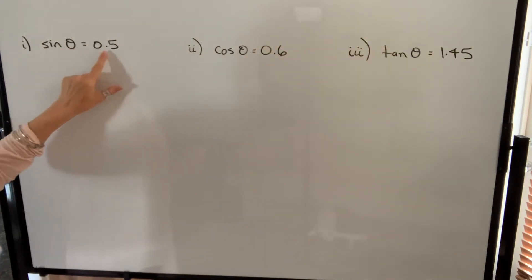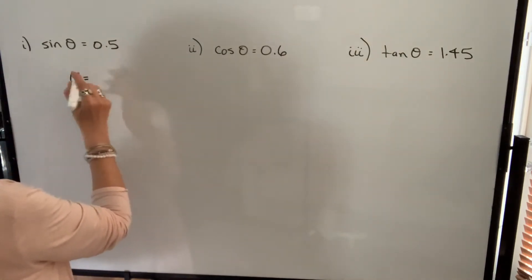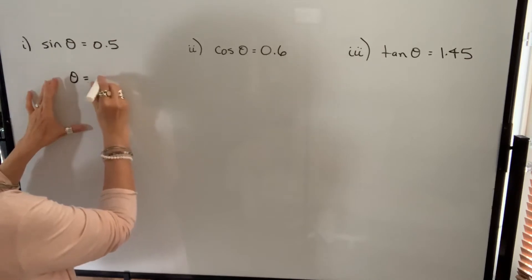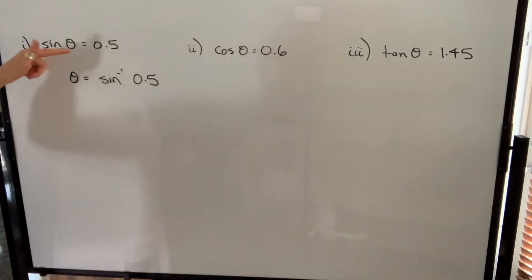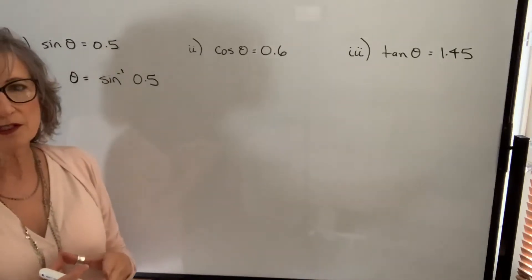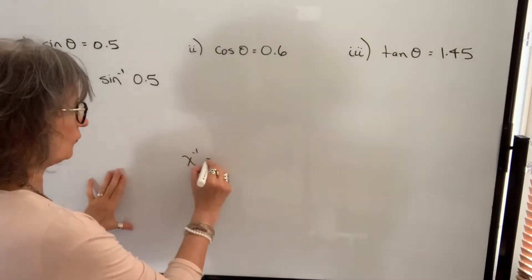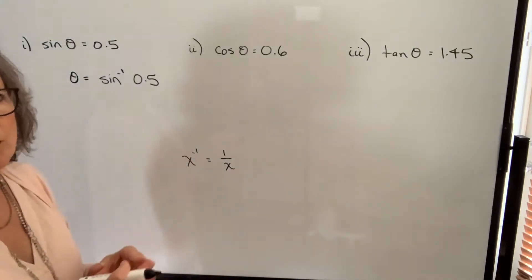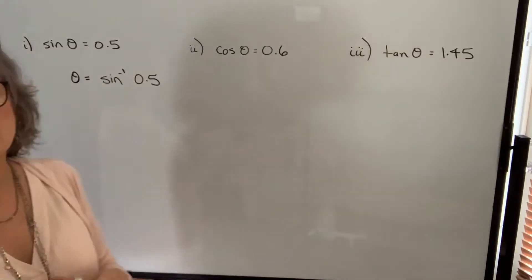So the sine of some angle theta is equal to 0.5. In order to isolate theta, we're going to apply the inverse sine function to both sides of the equation, and rewrite this as theta equals inverse sine of 0.5. These two statements are saying the same thing — it's just written in a different way. One thing that can cause confusion is the notation, because you may remember that if you saw anything to the negative one, it meant one over that.